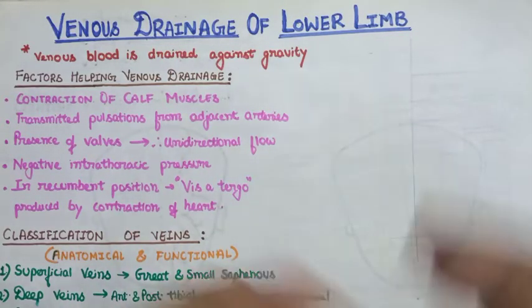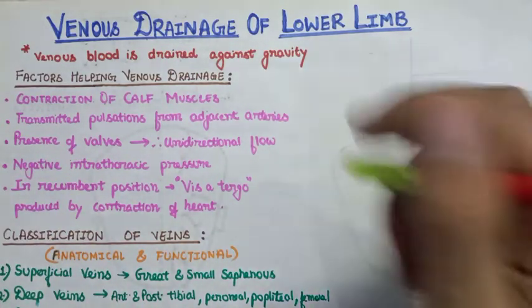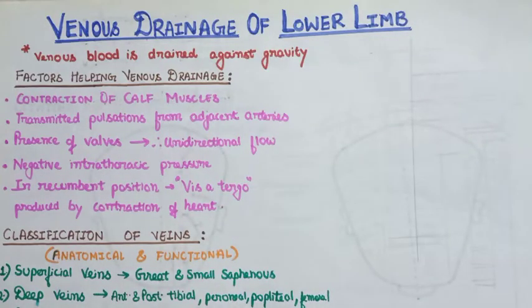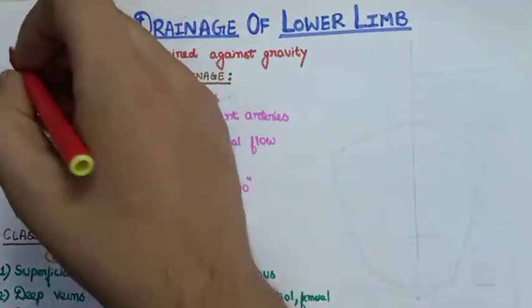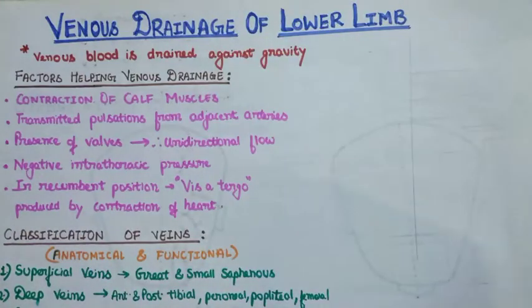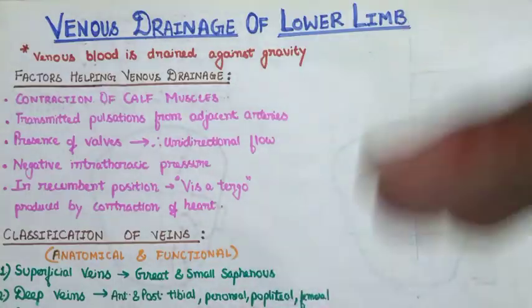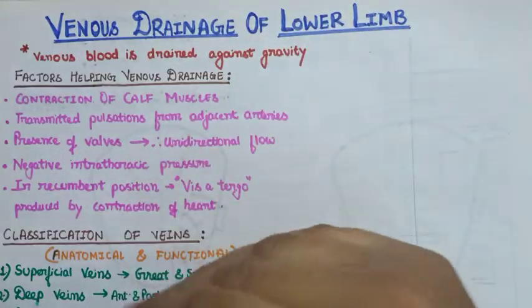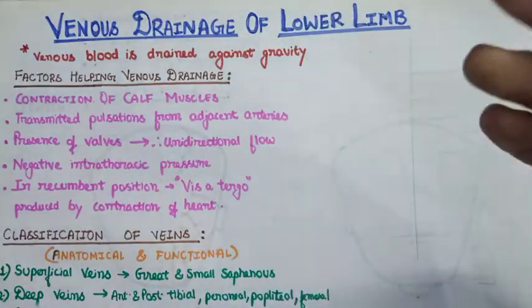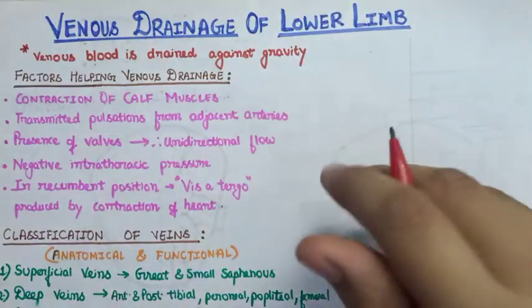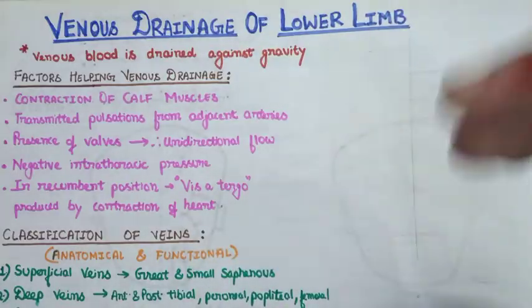Hello everyone, welcome to the channel. I am Ashish and in this video we will discuss the venous drainage of the lower limb. The venous drainage of the lower limb is important because the venous blood is drained against gravity, which provides hindrance to the free flow of blood towards the heart as blood travels from the toe up to the heart.